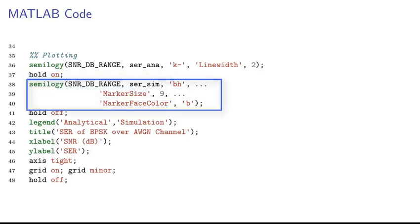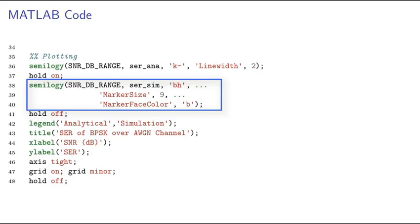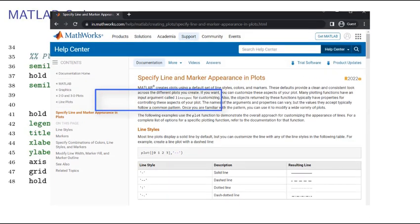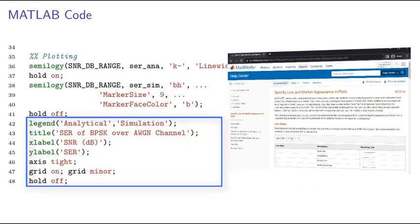Next, we plot the simulated symbol error rate using this command in which the line specification is set as blue hexagonal marker and no solid line. And the marker specifications are specified here. To learn more about the line specification, you can refer to MATLAB website.